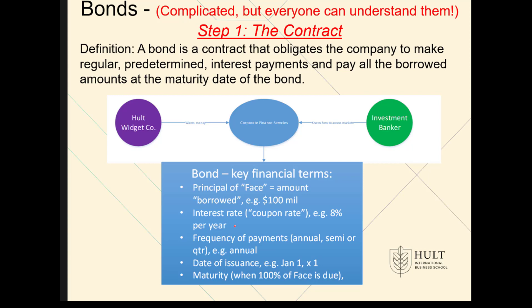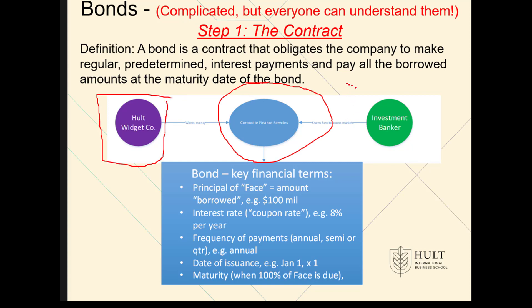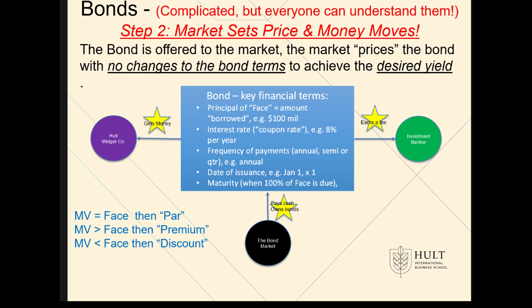This section here represents the instrument itself, and the parties are the issuer — in this case a company called Halt Widget Company — and the other is the investment banker. This is very complex with legal procedures, so Halt Widget Company will hire the investment bank to advise them on how to issue the bond. Next, we go to the market.